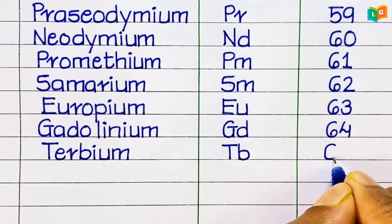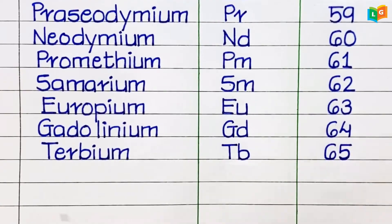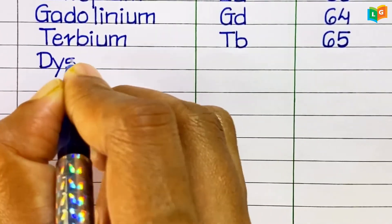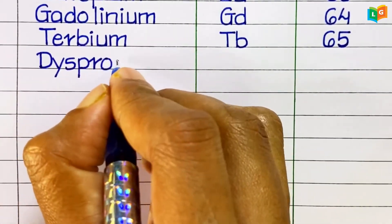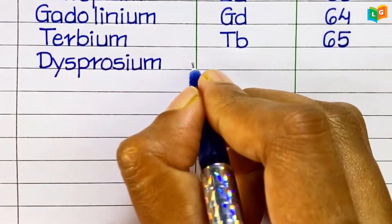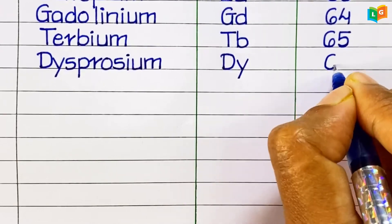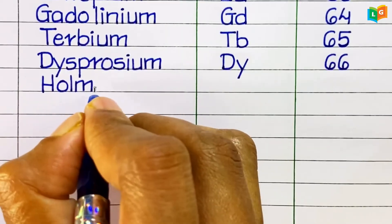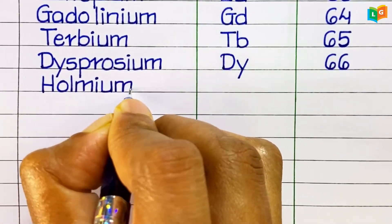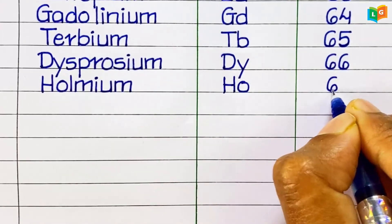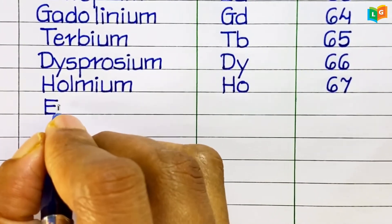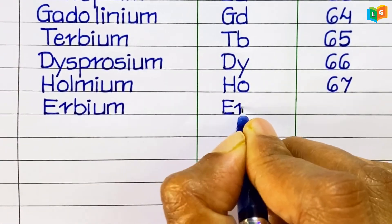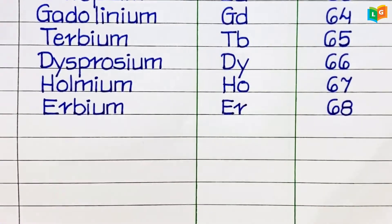Terbium, symbol Tb, atomic number 65. Dysprosium, symbol Dy, atomic number 66. Holmium, symbol Ho, atomic number 67. Erbium, symbol Er, atomic number 68.